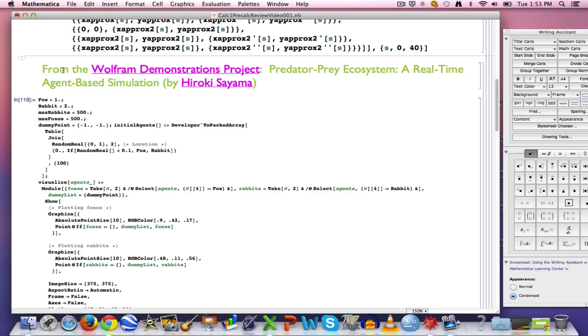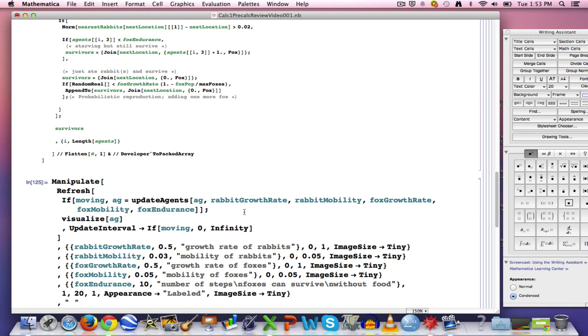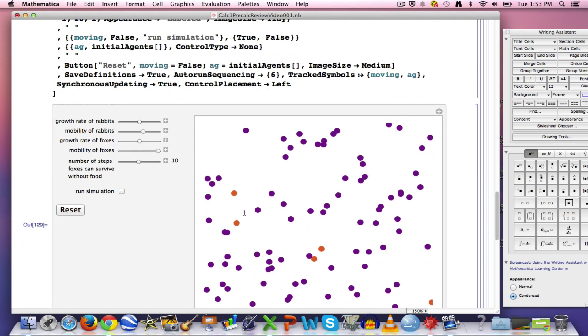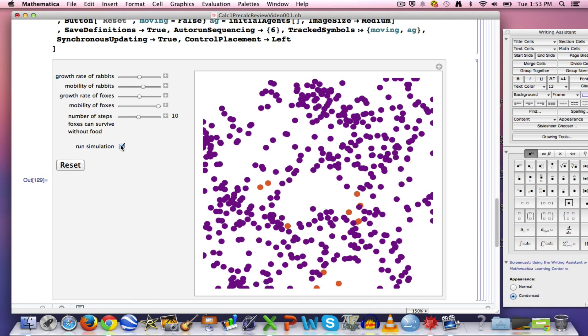Here's something I found off what's called the Wolfram Demonstrations Project by somebody named Hiroki Sayama. It's some code that generates a pretty neat simulation illustrating what's called a predator-prey system. What you want to think of when you look at these things is you want to imagine the orange dots are foxes, and the purplish dots are rabbits, and you want to imagine that the foxes eat the rabbits.